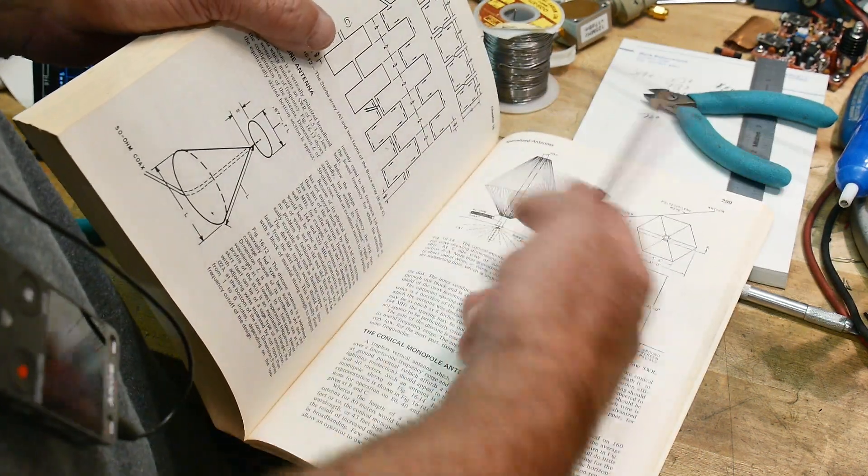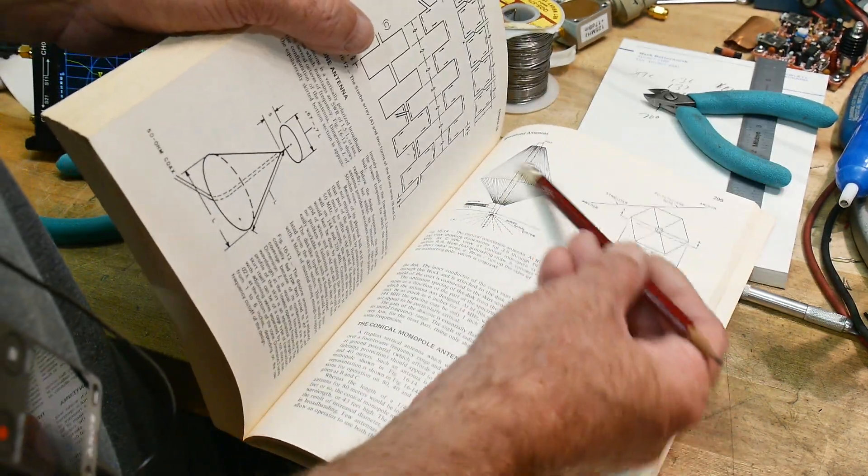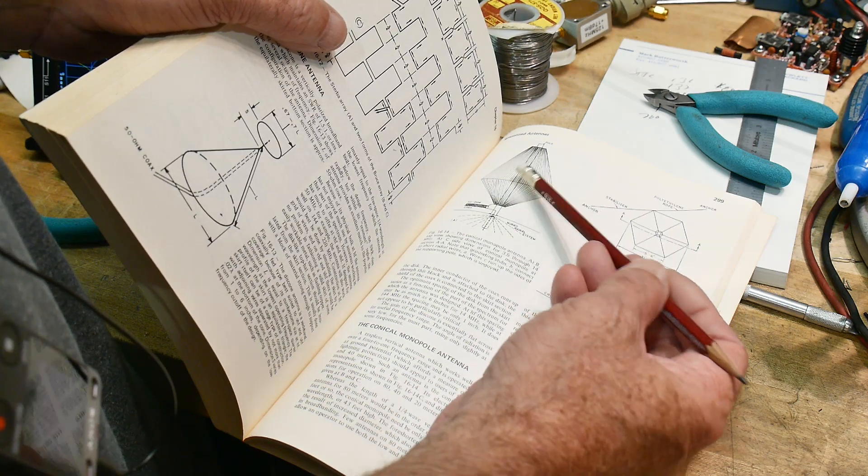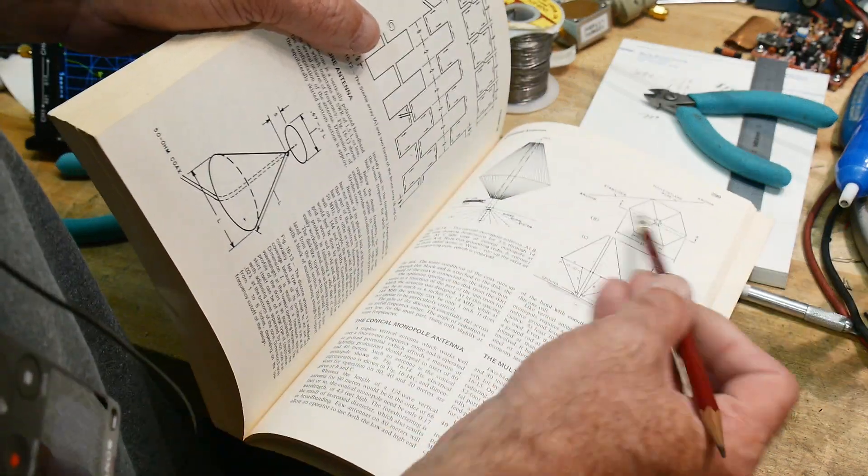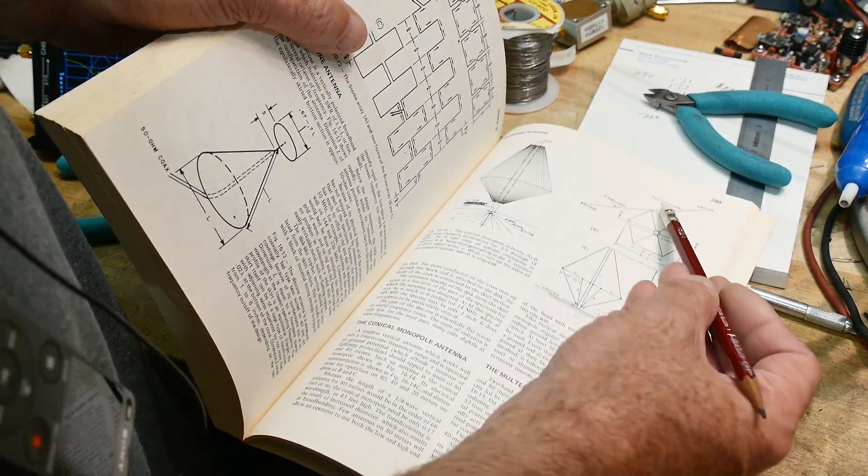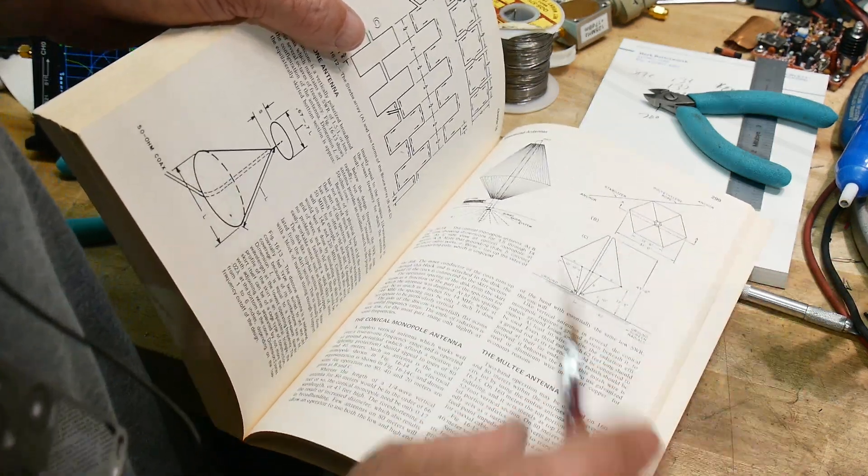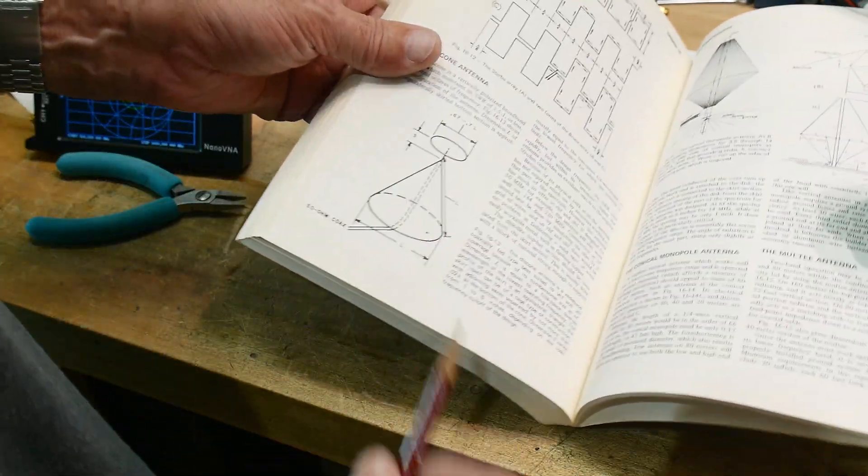And you see a lot of antennas like this if you go aboard Navy ships, you'll see some things that look like this. A lot of times they have wire hats on them and the whole thing's made out of wire. Sometimes they're solid like this.